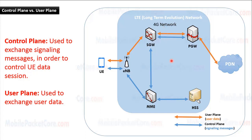In order to understand LTE network architecture, we need first to understand the difference between the control plane and the user plane. The main target of the LTE network is to connect the UE to an external network, so that the UE can send and receive data to and from this external network. Simply, the control plane is used to exchange signaling messages between the nodes. Signaling messages are used to control the data session of the UE, while the user plane is used to exchange user data between the nodes, so that the UE can send or receive user data to and from the external network.